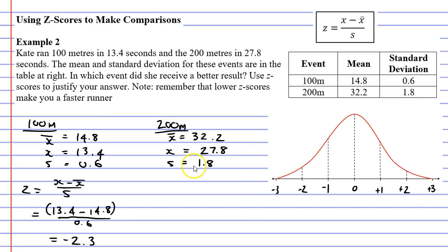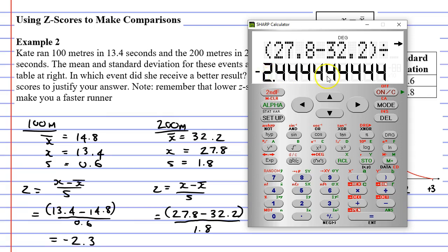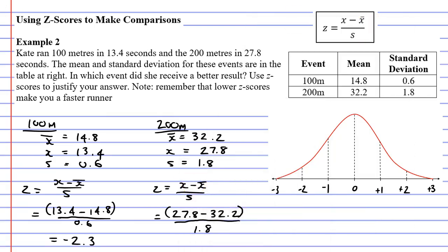Taking our formula, z equals x minus x-bar over s, we're going to get x, which is 27.8, minus x-bar, 32.2. All of this over our standard deviation of 1.8. Remembering that at the top of the fraction, we're going to put it in brackets, forcing the calculator to subtract before it divides. Open our brackets, 27.8, minus 32.2, closing our brackets, dividing this by 1.8, and we get negative 2.4 continuous. So we'll write that down as negative 2.4 to one decimal place.